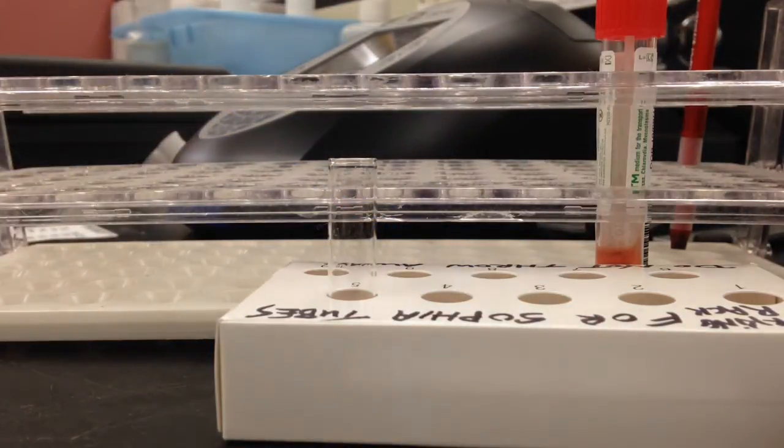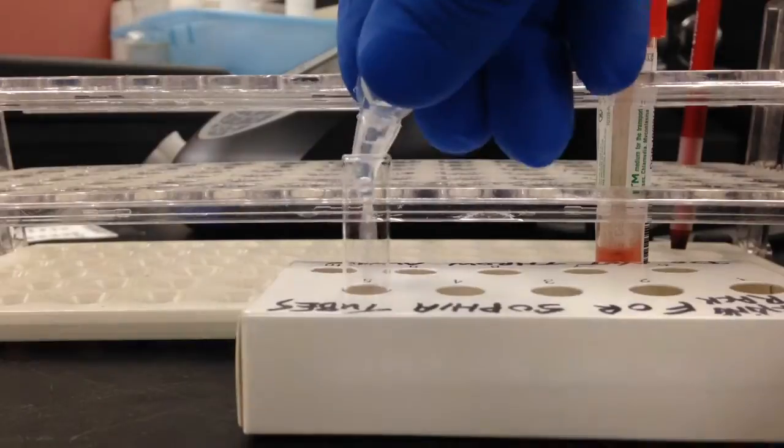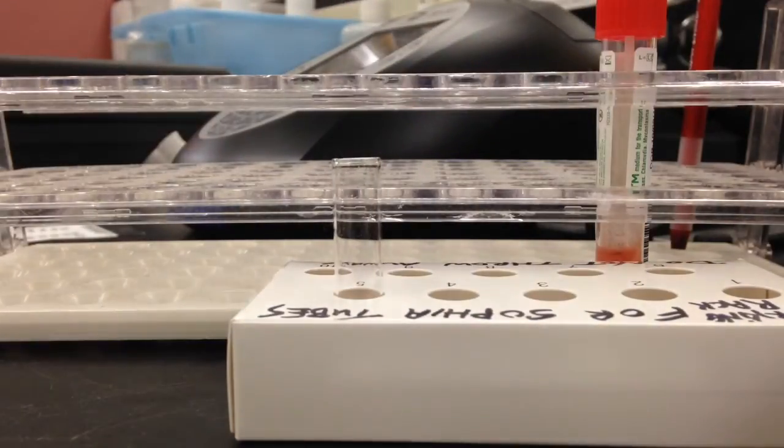The first thing you're going to do is take the reagent solution, twist the top off, and add the entire contents to the reagent tube.